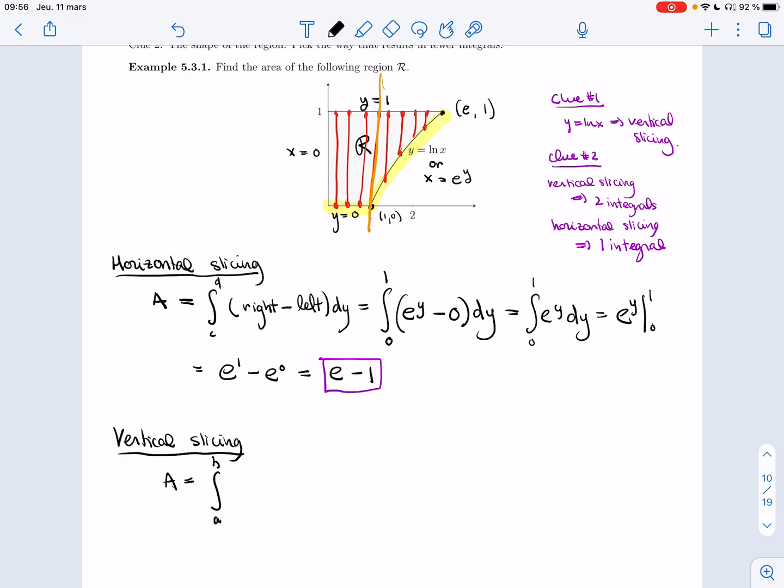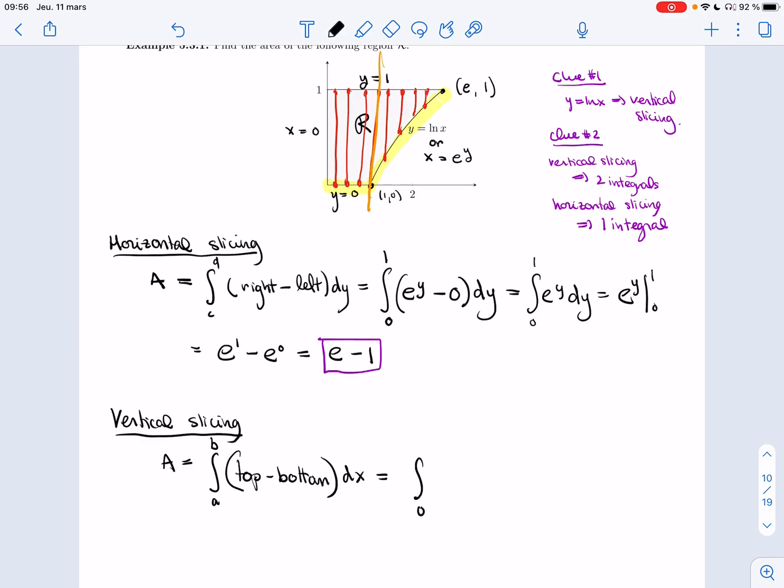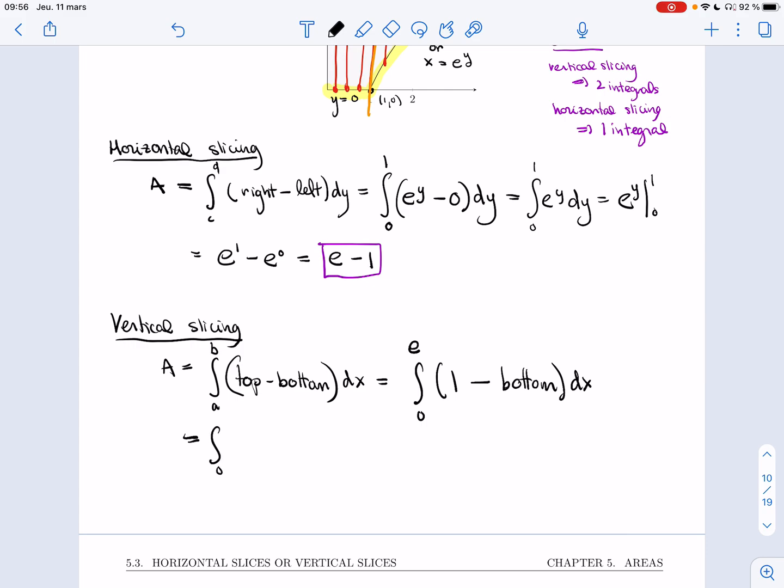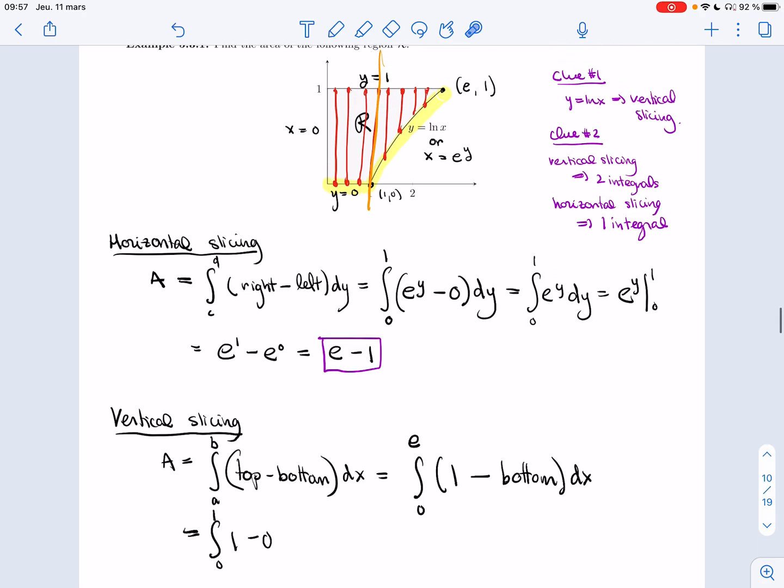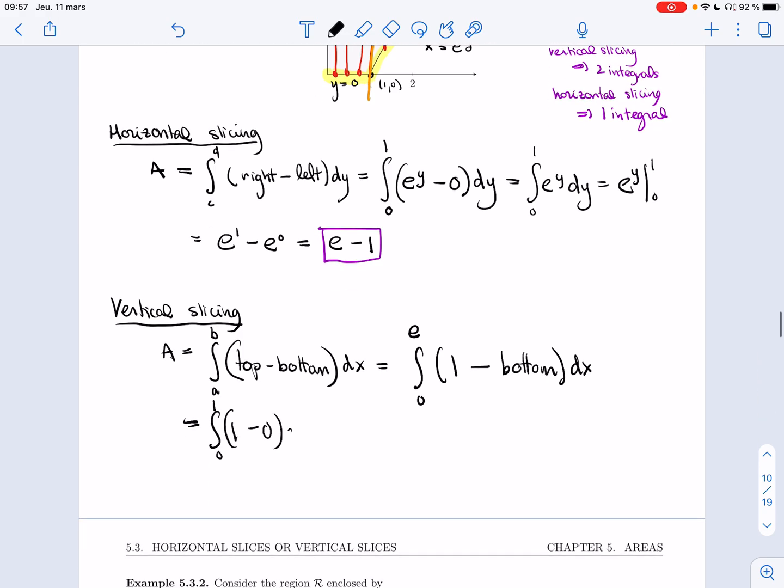So now if I use vertical slicing, it will be a to b top minus bottom dx. And so a is the smallest value of x, so that's zero. So here my variable is x. The biggest value of x is e. And then top will be one, but bottom changes. So I cannot write a formula for bottom until I split up my integral. So zero to one of one minus zero. So one is the top, zero is the bottom for that region.